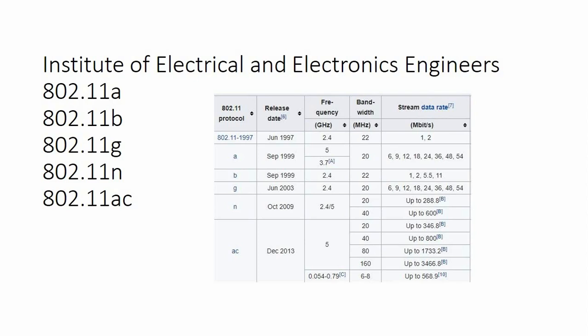802.11ac uses 5 gigahertz with a stream rate up to 3,466.8 megabits per second. The frequency and stream rate differ across standards a, b, g, n, and ac. Thank you guys, subscribe for more videos.